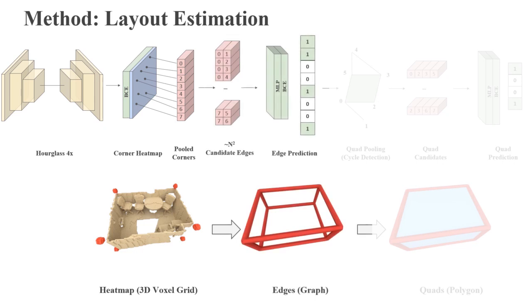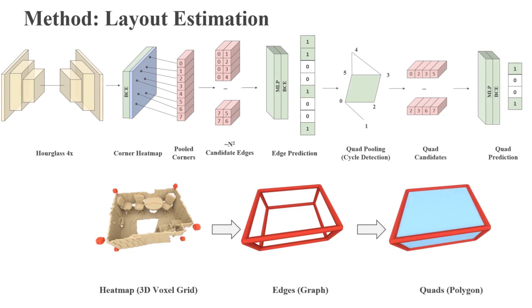From the predicted edges, we construct a 3D wireframe from which we find layout components as quads through a depth-first cycle detection. Finally, we predict the candidate quads in the final scene layout.